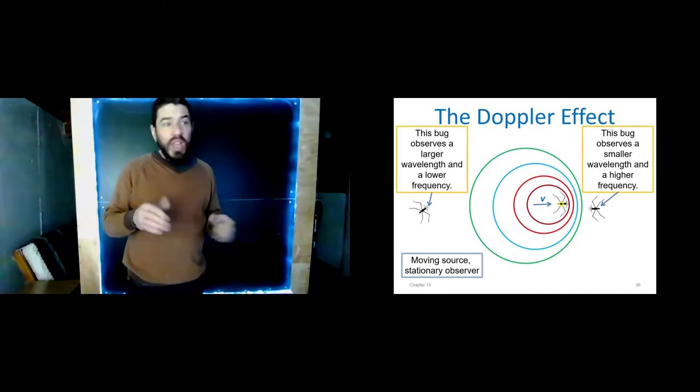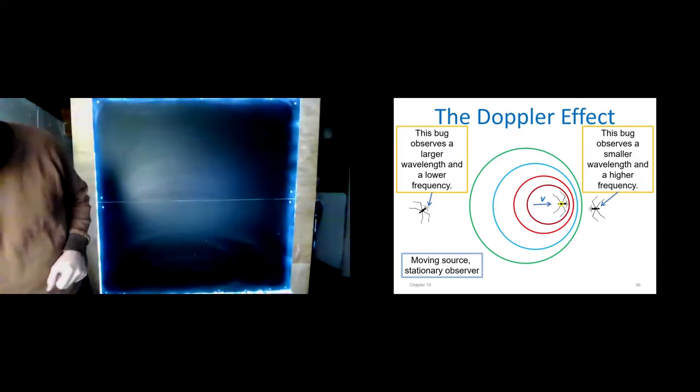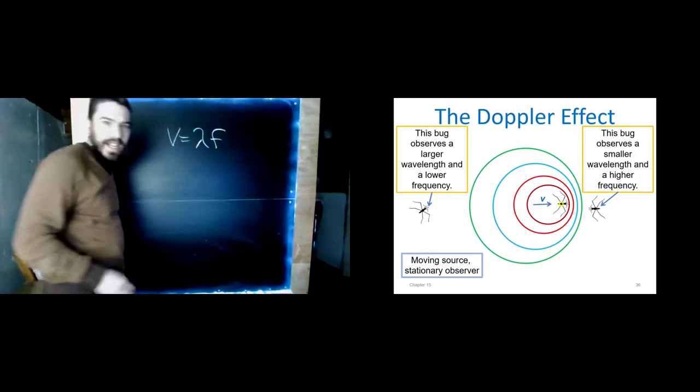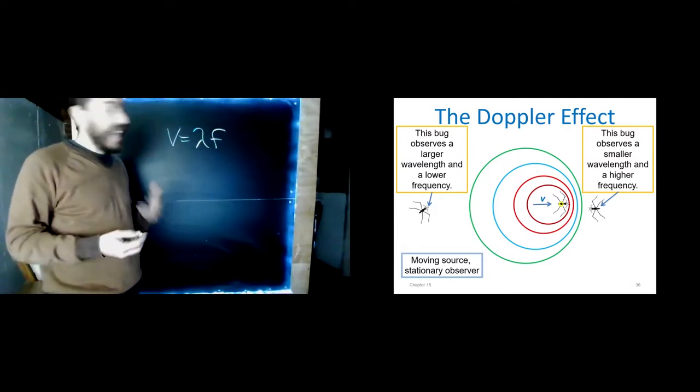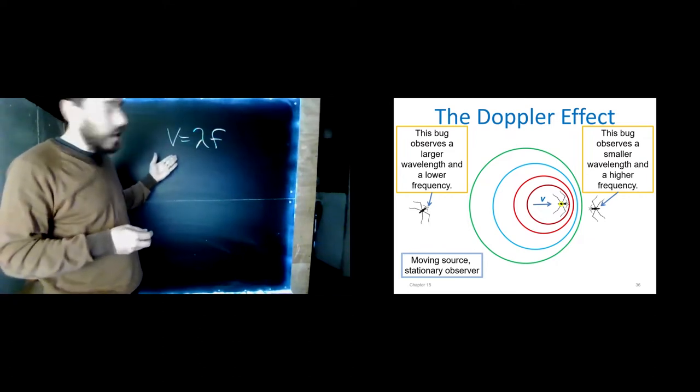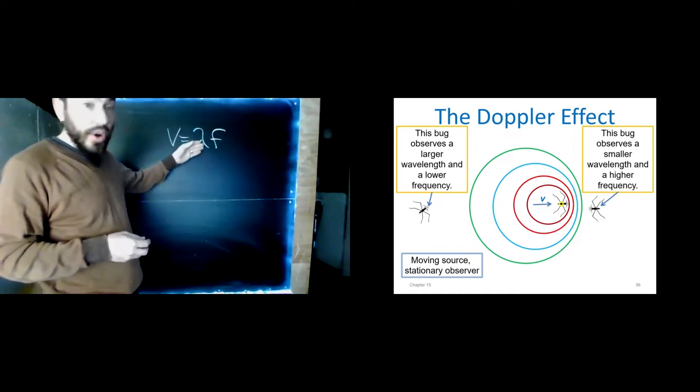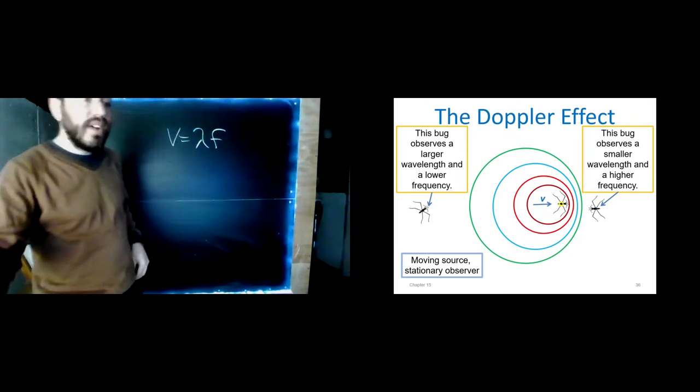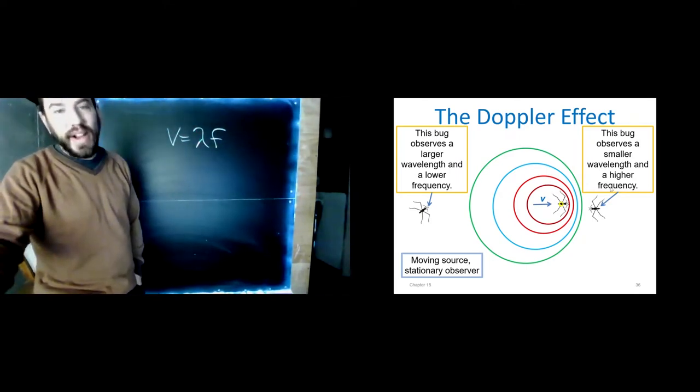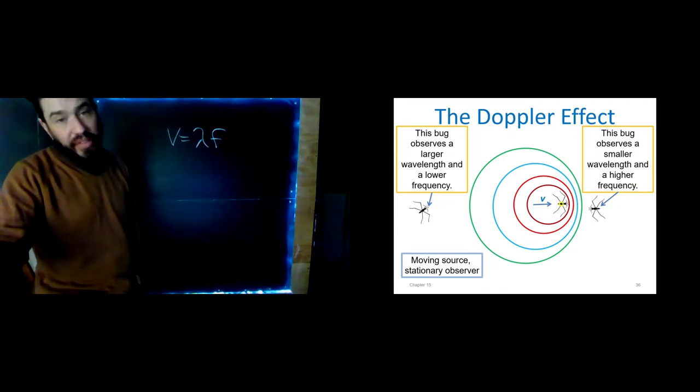So we can just see from this picture that the water skipper in front will observe a lower wavelength. Now remember, v equals lambda f. And the velocity of a wave is determined by what kind of a wave and what the medium is. So this is a water wave in a pond that determines the velocity. So that means that as the wavelength goes down, the frequency must go up. And so the bug in front observes a smaller wavelength and a higher frequency.